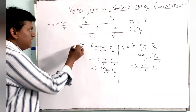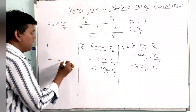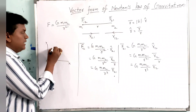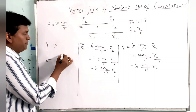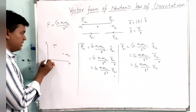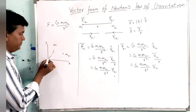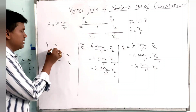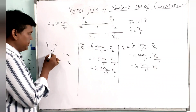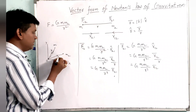Now, consider these two masses on an xy plane with an origin. Mass M1 is at position vector R1 from the origin, and mass M2 is at position vector R2 from the origin.